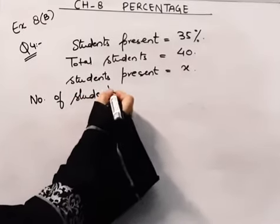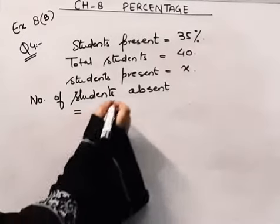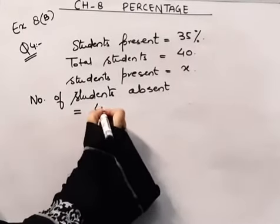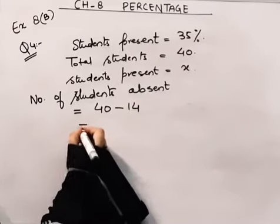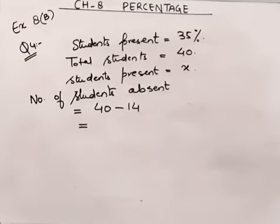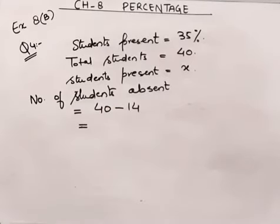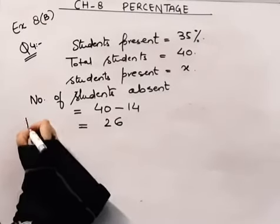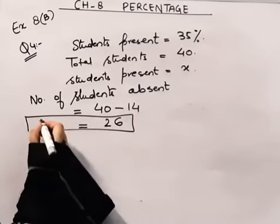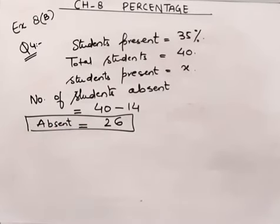The number of students present is 14. So the number of students absent on that day is 40 minus 14, which equals 26. So 26 children were absent. Now we will move on to question number 5.